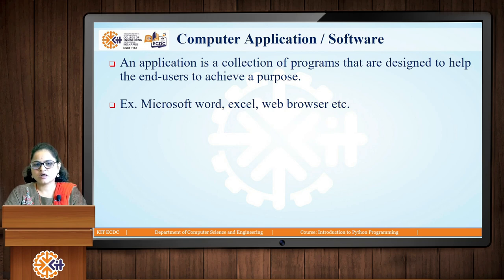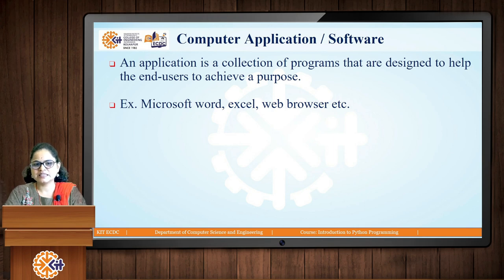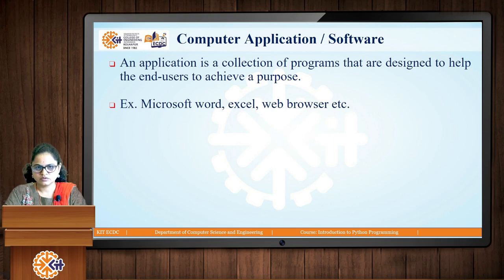For example, if you are creating a Word document using Microsoft Word, to create a document there is a separate program, to save it there is a separate program, to update it there is a separate program. Collectively, it forms Microsoft Word. Whatever different functionalities are provided in Microsoft Word are different programs, and collectively it is called the Microsoft Word application. So an application is a collection of programs designed to help the end user achieve some task.